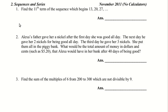Sequences and Series, Problem Number 3: Find the sum of the multiples of six from 200 to 300, which are not divisible by nine.